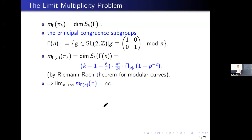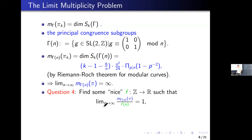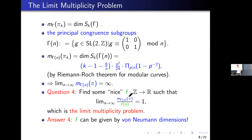We pick a special family of lattices, gamma_n, which is the elements of SL2 over the integers that are trivial modulo n. We can consider the multiplicity for this group, which is given by the dimension of the cusp forms with respect to this subgroup. This can be computed by a formula, and I should mention this is not a straightforward computation — you should apply the Riemann-Roch theorem for the corresponding modular curve. You can see that if you let n approach infinity, the multiplicity goes to infinity as well. We are trying to find a nice function from integers to real numbers such that the limit of this quotient is 1. That is the limit multiplicity problem.